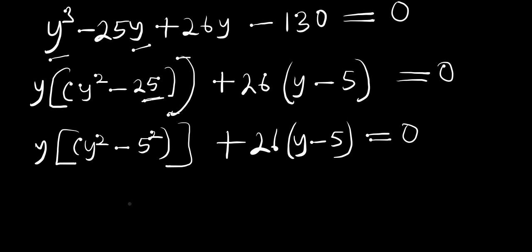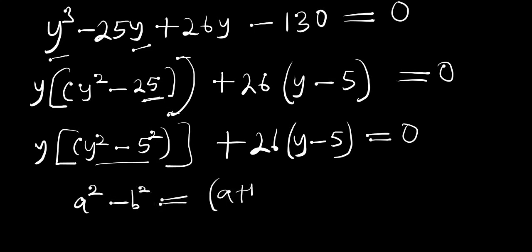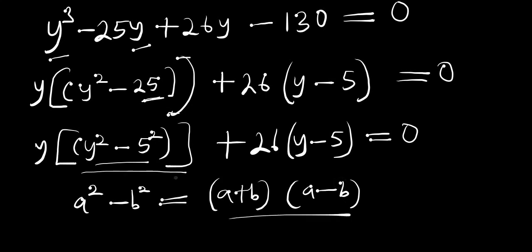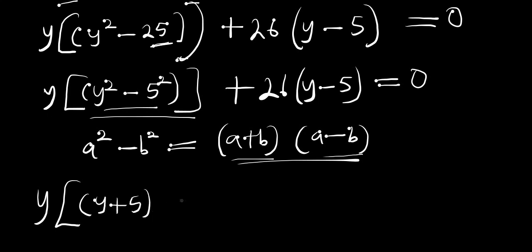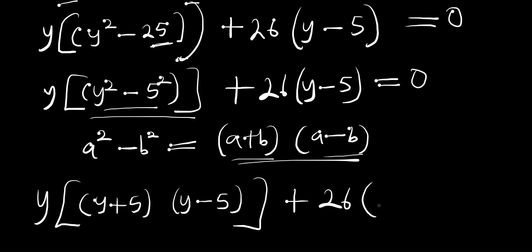We apply the difference of two squares identity: a² - b² = (a + b)(a - b). So y² - 5² becomes (y + 5)(y - 5), giving us y(y + 5)(y - 5) + 26(y - 5) = 0.